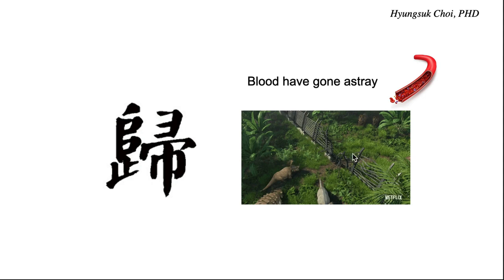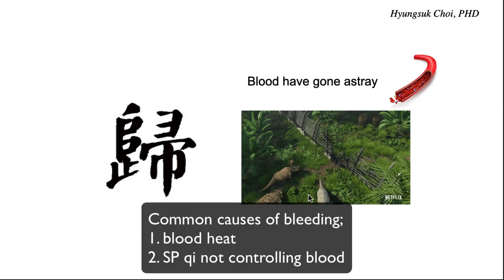When there is bleeding, there are two scenarios. The first scenario is a blood heat condition. When there is blood heat, blood goes outside of the fence — like crazy horses jumping around and going outside. That is blood heat bleeding, a very common condition.